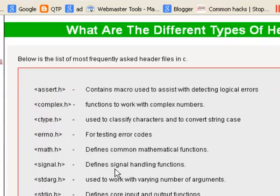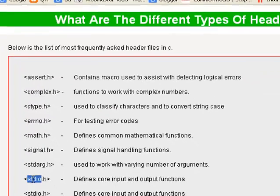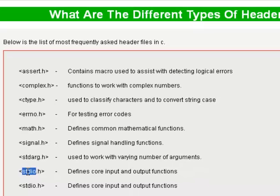So here is the list of commonly used header files in C language. Most commonly used header files are stdio, stdio.h and conio.h.